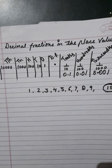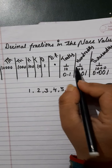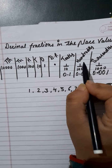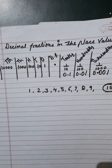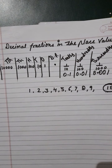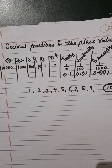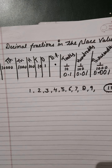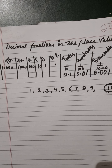If we ask the place value in the tens, hundreds, and thousands, you will just write the digit multiplied by its place value. And in the denominator part, you will write the place value as tenth, hundredth, and thousandth.